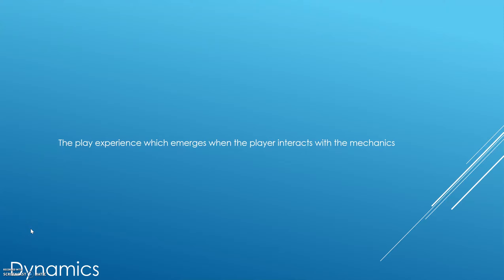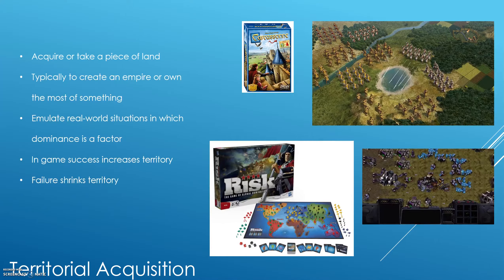The dynamics of the play experience appear when the player interacts with the mechanics. There are several core dynamics which we can use as a starting point in the game design process. We used the race to the end dynamic as a good starting point to create mechanics for a certain type of game. Here are a few of the most popular core dynamics.